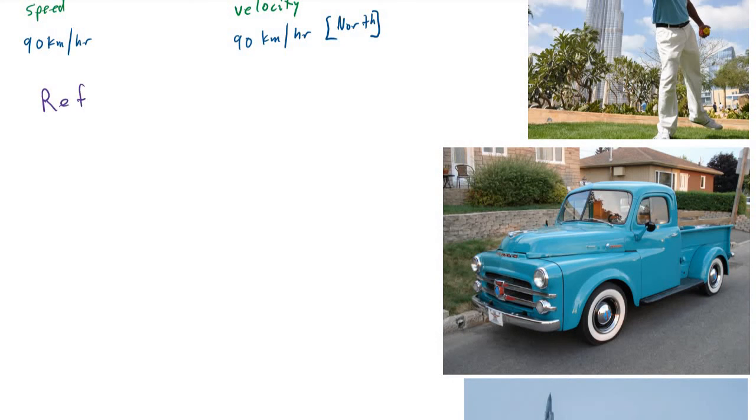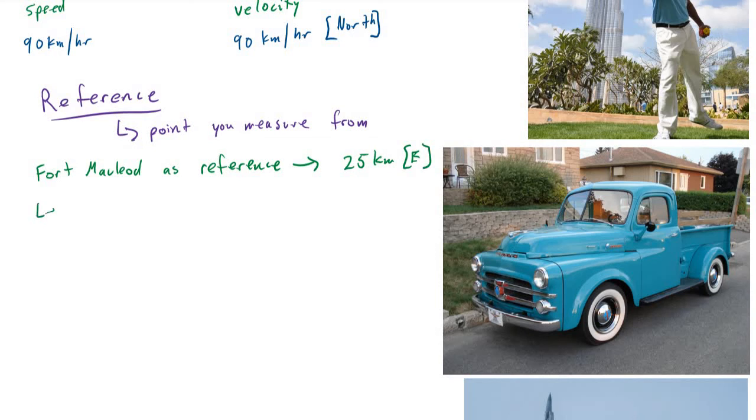A reference is basically the point that you're measuring from. Let's imagine that you're halfway between Fort McLeod and Lethbridge. If you ask where you're located, and I would say 25 kilometers to the east, well, again, to the east of what? You're 25 kilometers to the east of Fort McLeod, and you're 25 kilometers to the west of Lethbridge. So if Fort McLeod is chosen as your reference point, you are 25 kilometers to the east. Whereas, if Lethbridge is chosen as your reference point, you would be 25 kilometers to the west. That's if you're halfway in between those two places.